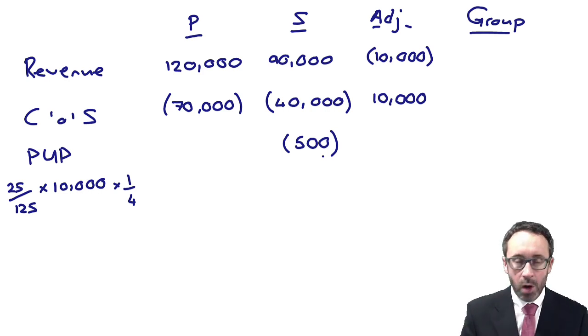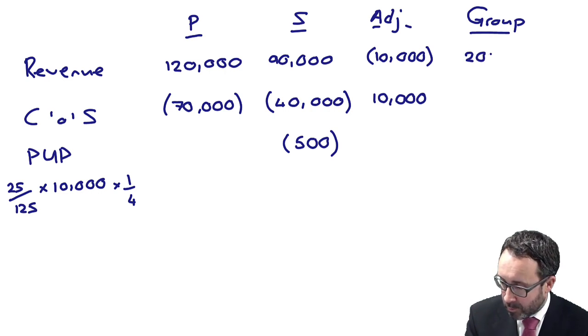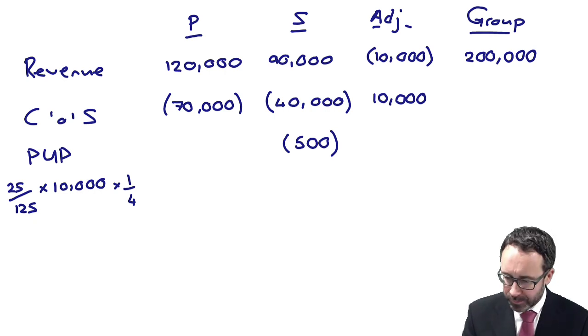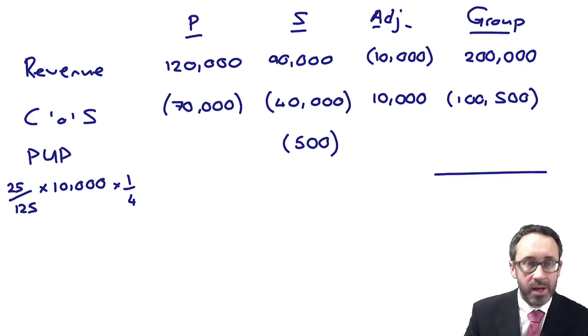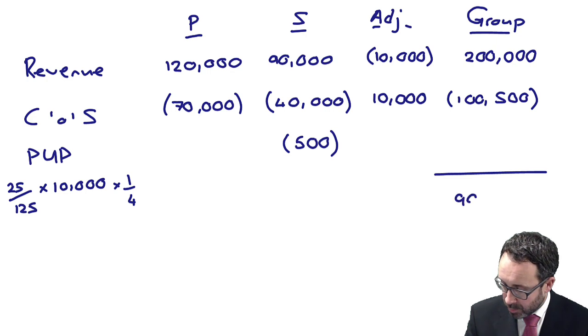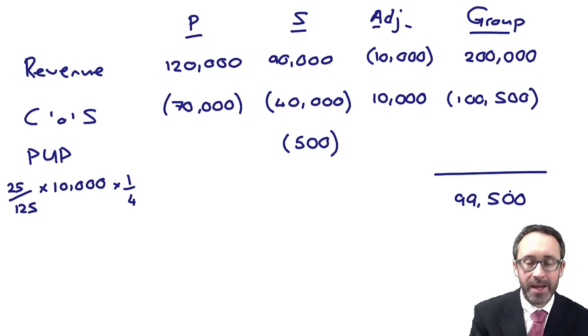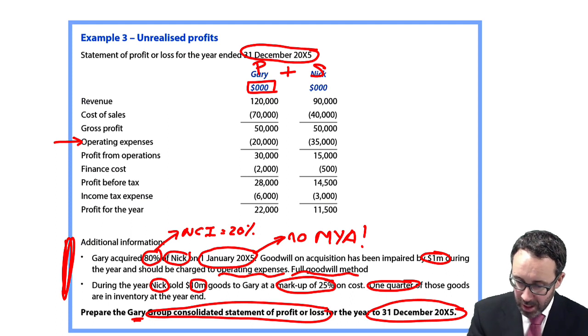It's so frustrating to get the numbers in there and put them in the wrong side. So that's everything so far. If we then total it across, my revenue is 200,000. Cost of sales, let me just check my maths, I think it's 100,500, which gives me a gross profit of 99,500.